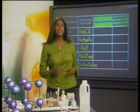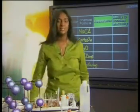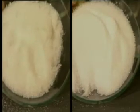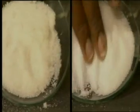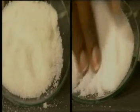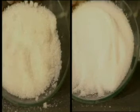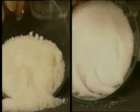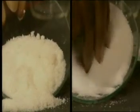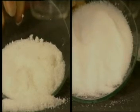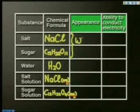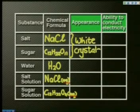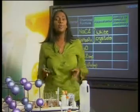Let's have a careful look at the salt and the sugar. Do you see that both these solids are finely divided rather than being one single piece? Do you notice that all the grains of salt have pretty much the same shape, and so do all the grains of sugar? We call these grains crystals. The salt and sugar are both white solids. Water, as we all know, is a colourless liquid.